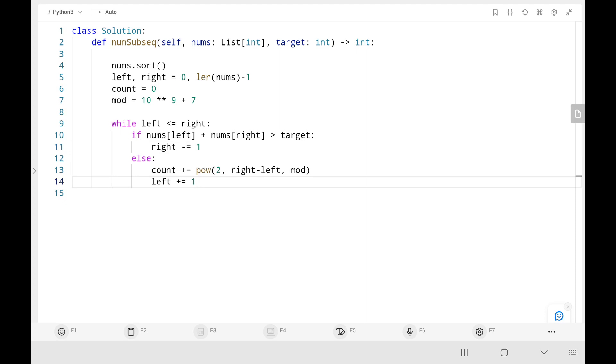Else, if the condition satisfies, I will count the number of subsequence that can be formed using the right and left indices. After counting the number of subsequences, I will move my left pointer to the right. Then finally, I will return the count variable by taking the modulo of it. That's all the code is. Now we will run the code.